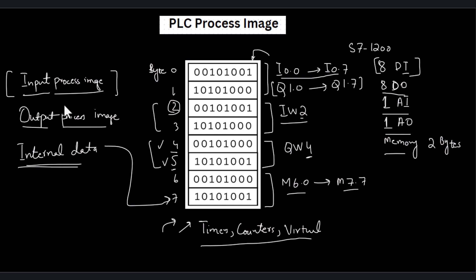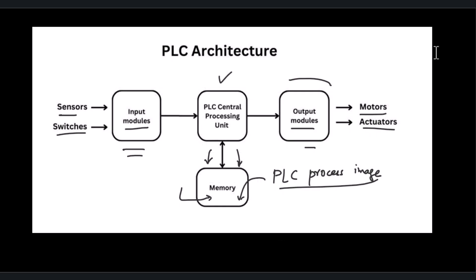The input process image stores the data coming from input modules — it can be digital or analog. The output process image stores the data that has to be sent to the output modules — it can be digital or analog. The internal data stores memory, timers, counters, or any virtual data used in the PLC program.